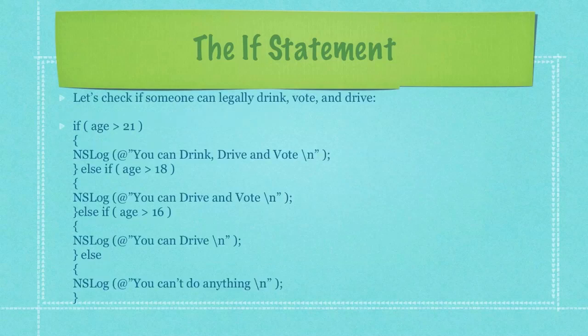Here I'm actually providing real code that's going to check if someone can legally drink, vote, or drive. First I'm going to check if they're 21. If they are then I'm going to print out to the screen that the person can drink, drive and vote. Then I'm following that up with an else if statement. If their age is greater than 18, I'm going to print out you can drive and vote and you probably get the point.